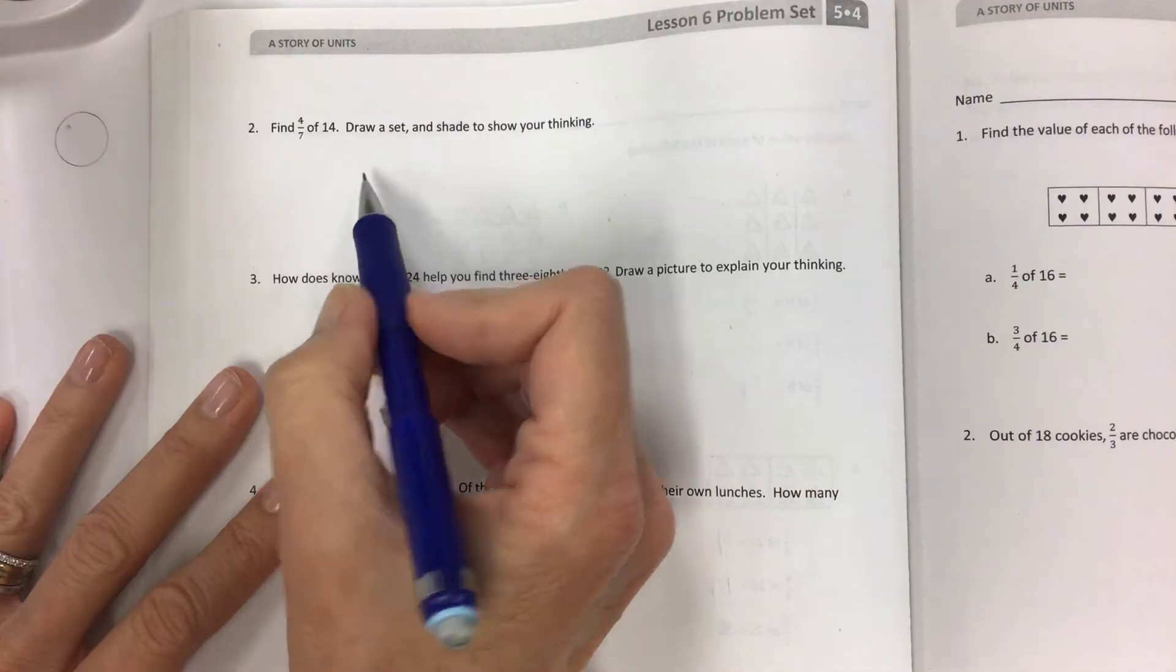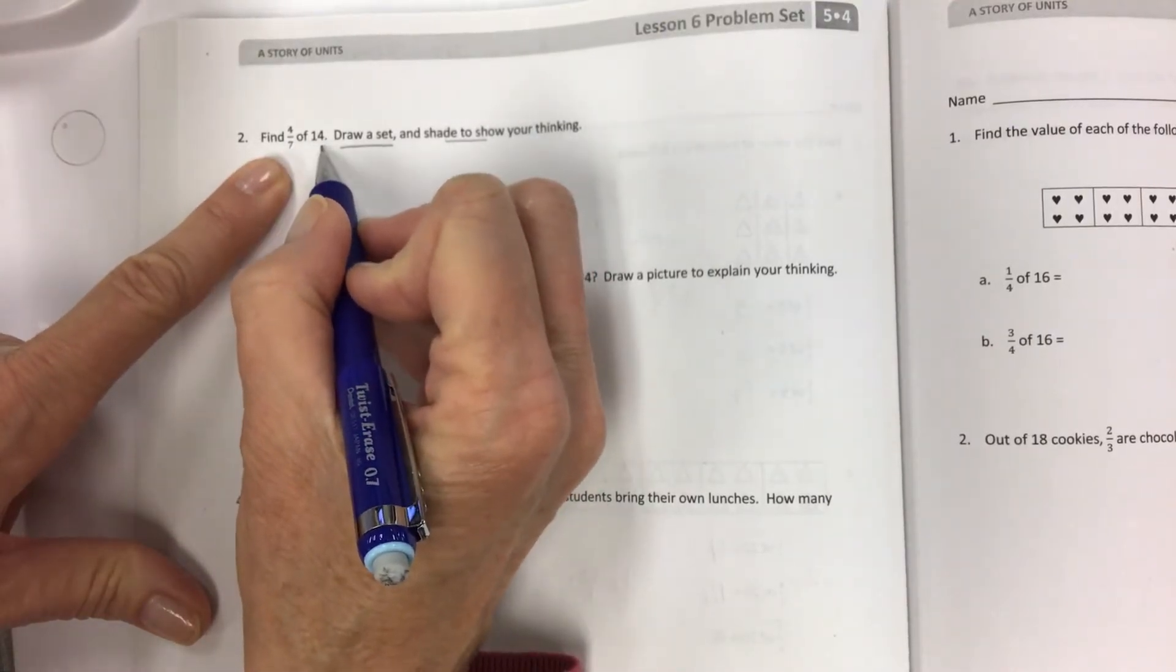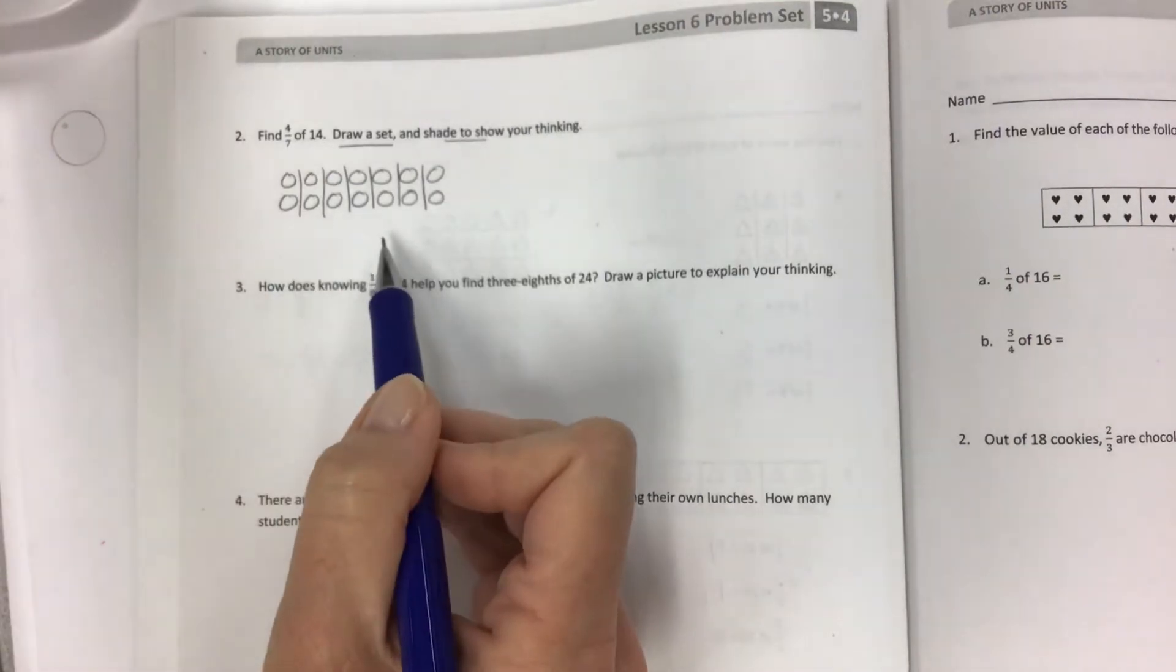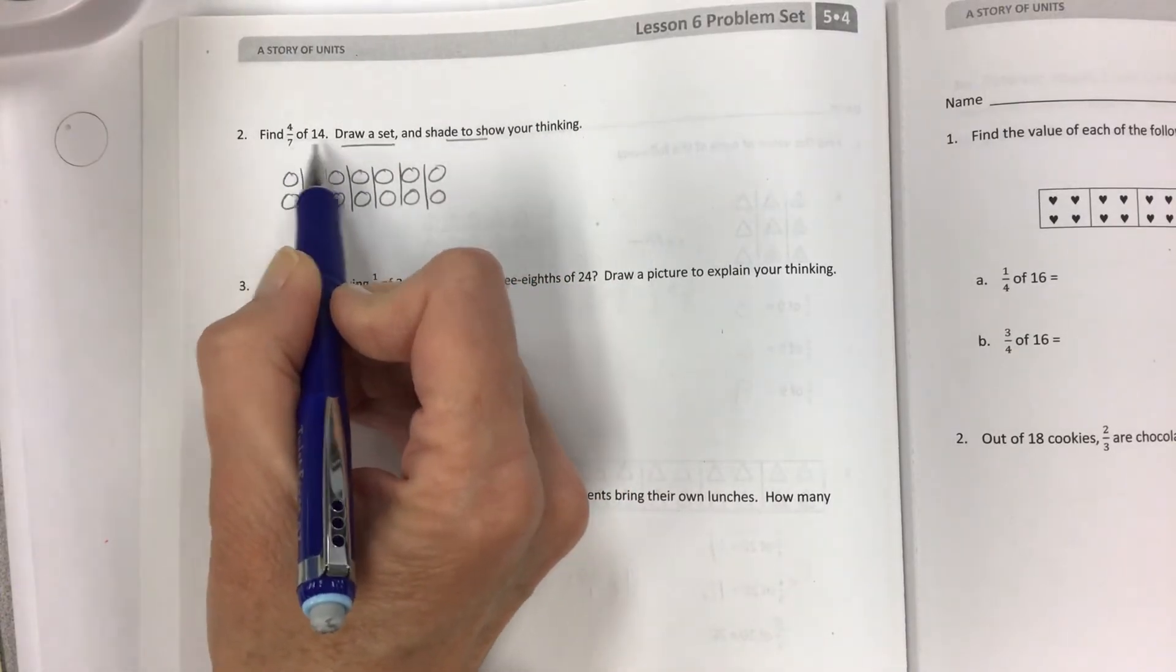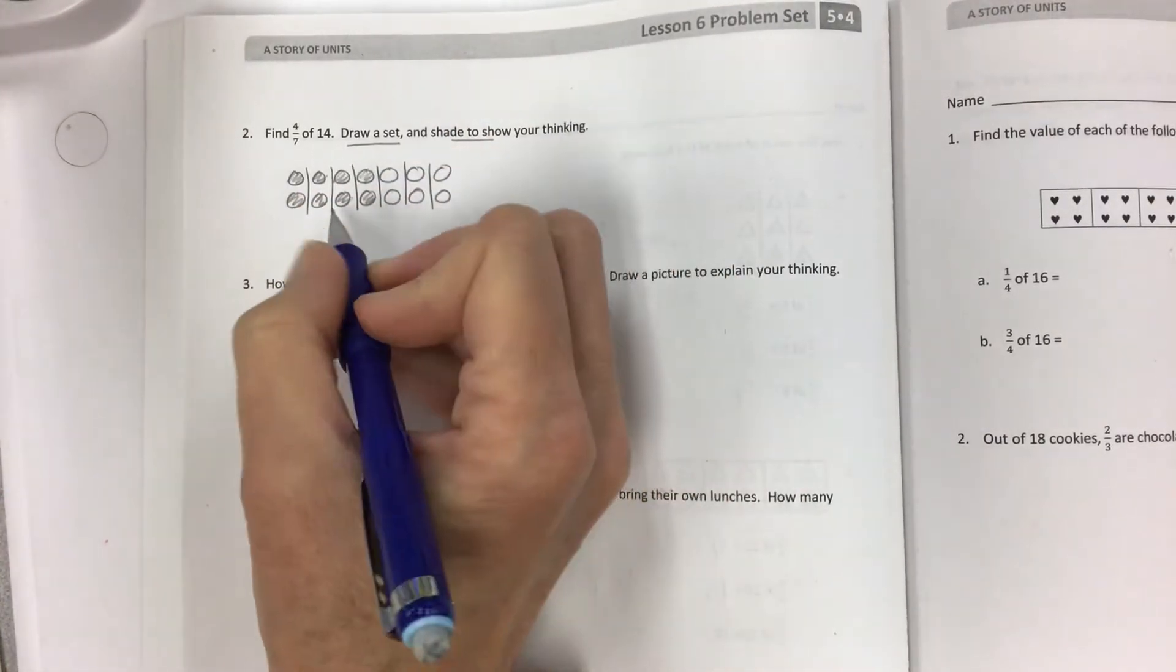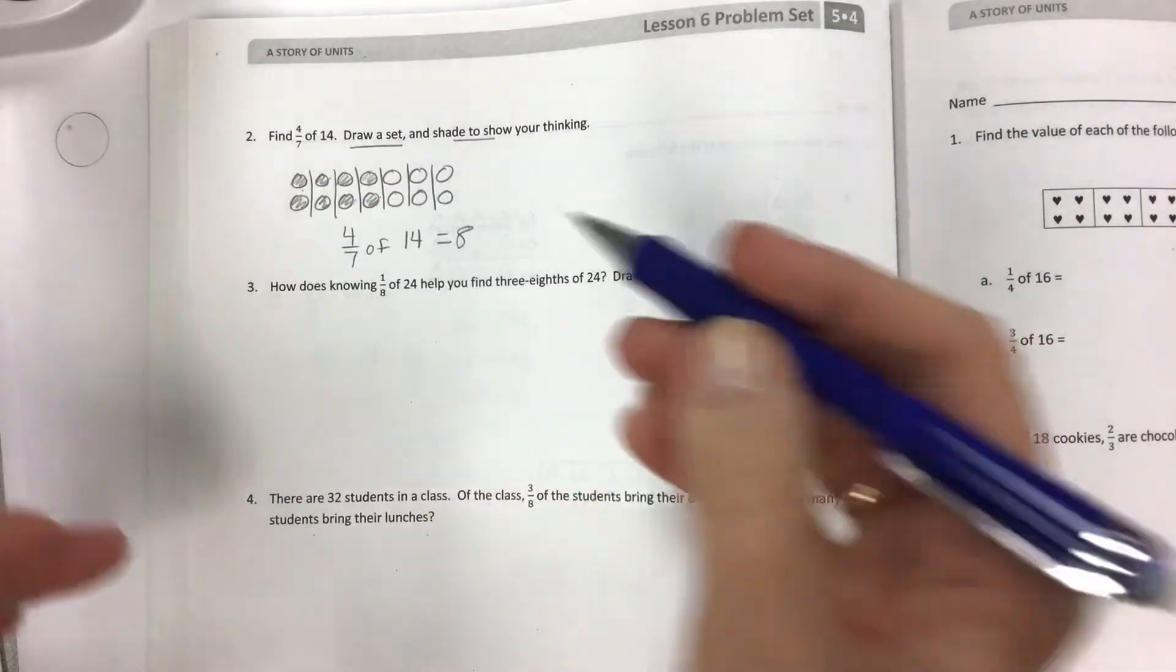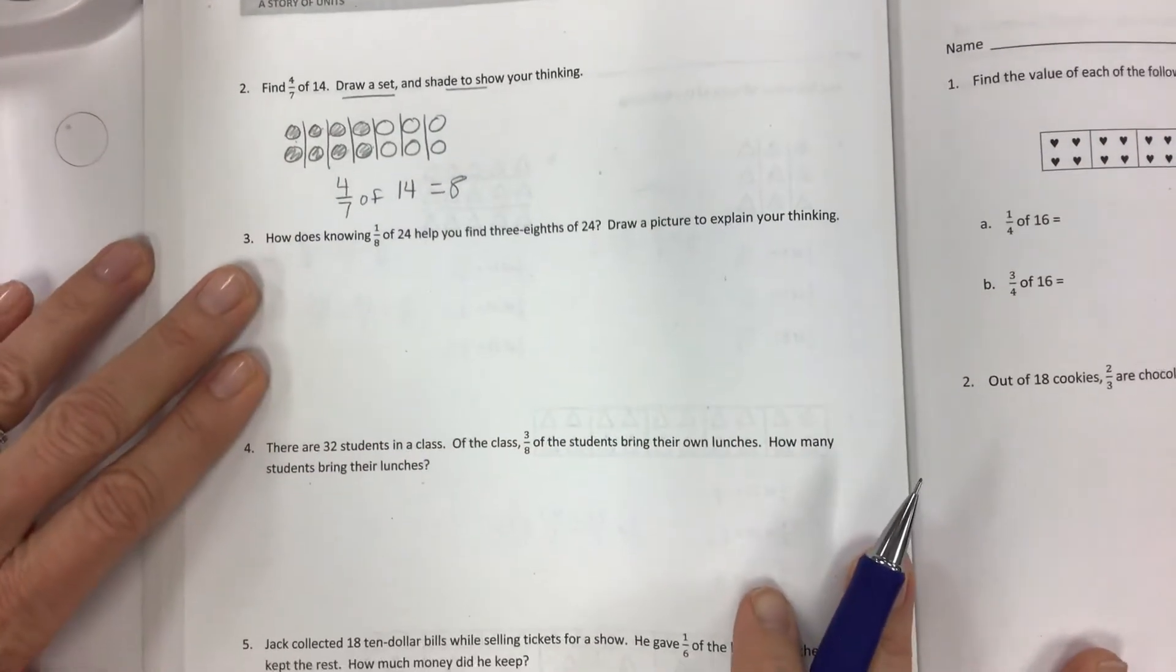All right. Find four-sevenths of fourteen. First, draw the set and then shade to show your thinking. So I need to have seven sets within my fourteen. Okay. So one, two, three, four, five, six, seven. And then one, two, three, four, five, six, seven. These are the sets. You have to set them up like this. It's not two sets of seven. It's seven sets of two. So how do you find four-sevenths of fourteen? It would be this is one, this is two, this is three, and this is four. So four-sevenths of fourteen would be equal to eight, two, four, six, eight. Okay. You can also do the multiplication. But again, we're not trying to do that today because we don't want to create these big division problems. We just want to see the model, make the model. It'll be so much easier.